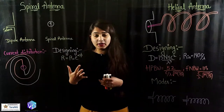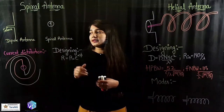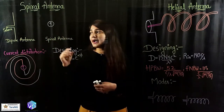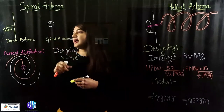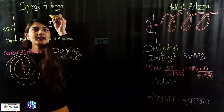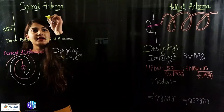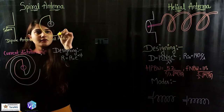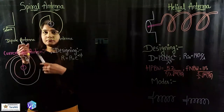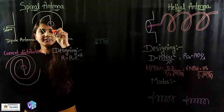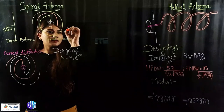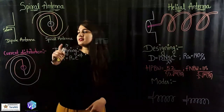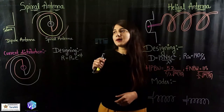We can make the spiral antenna from the dipole antenna. In 1954, the spiral antenna was discovered from the dipole antenna by turning its edges. Here I have the dipole antenna and I can turn its edges — this is one edge and this is my other edge, I can turn this edge as well. And this is how I can form my spiral antenna.